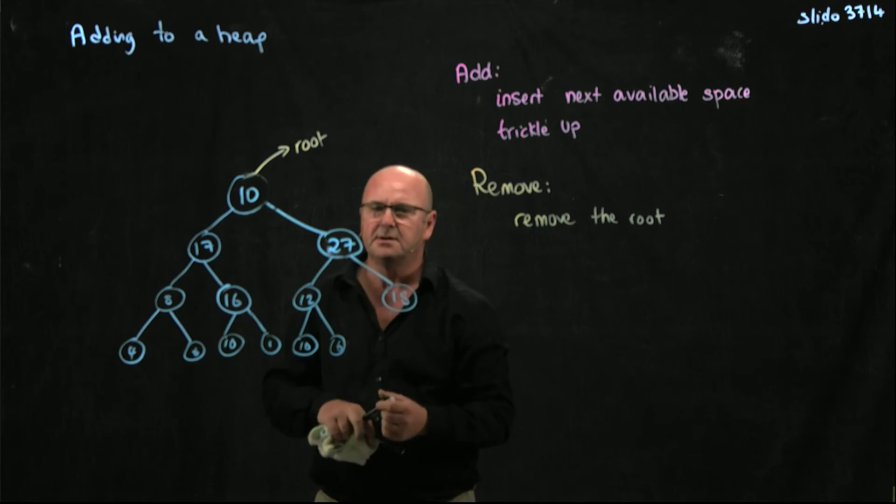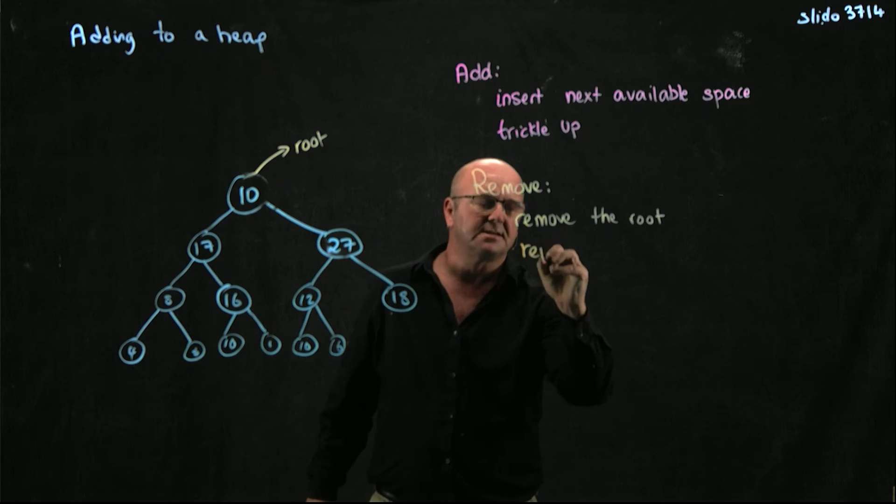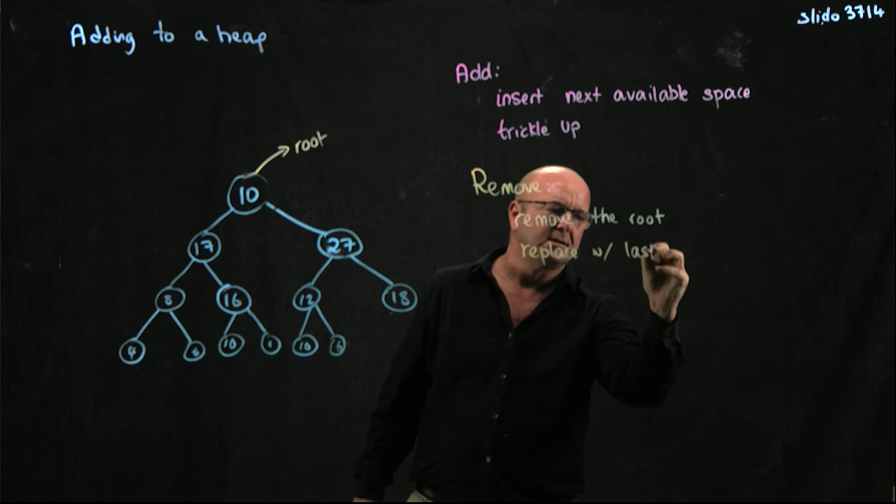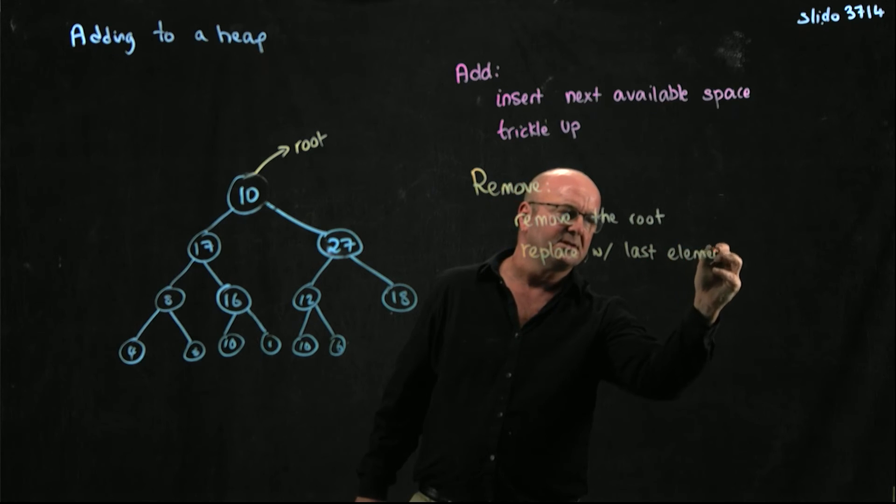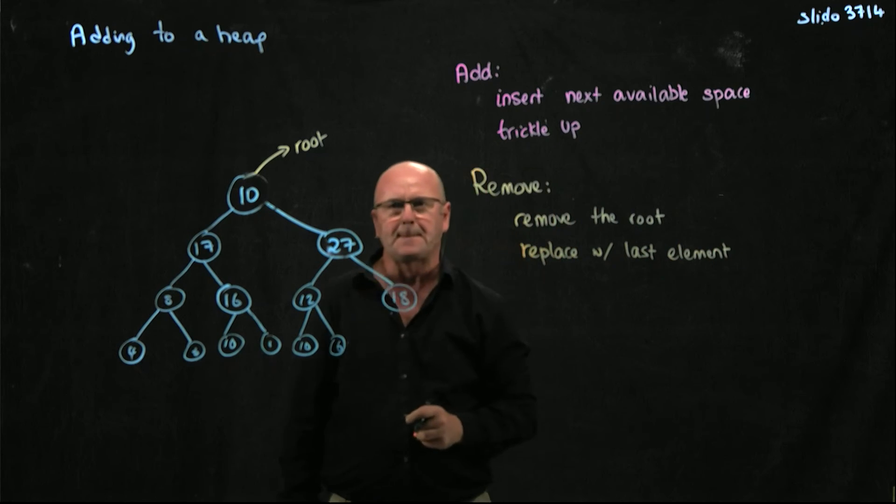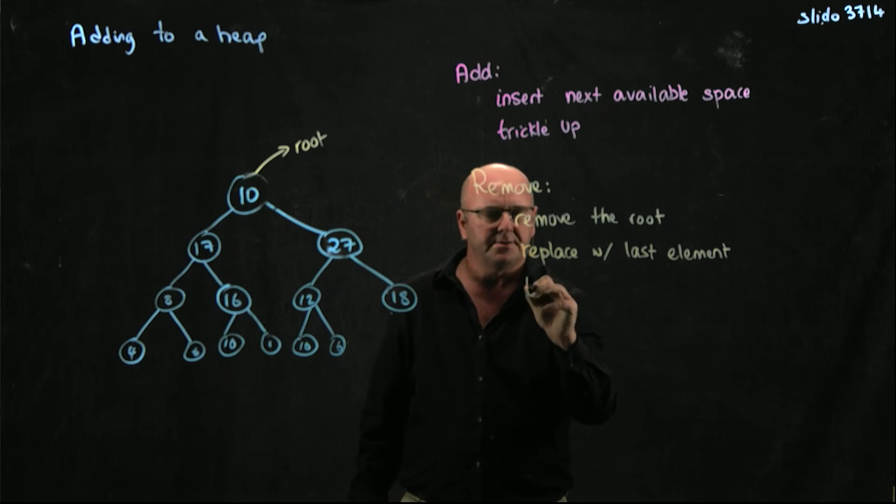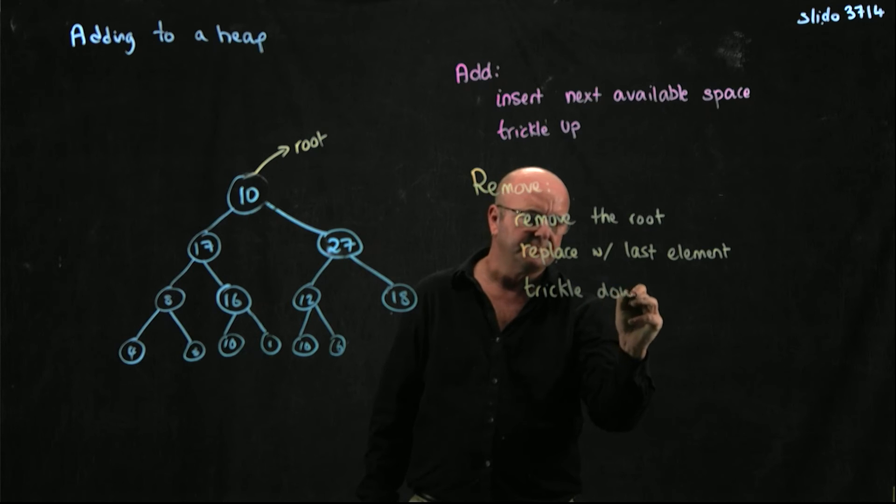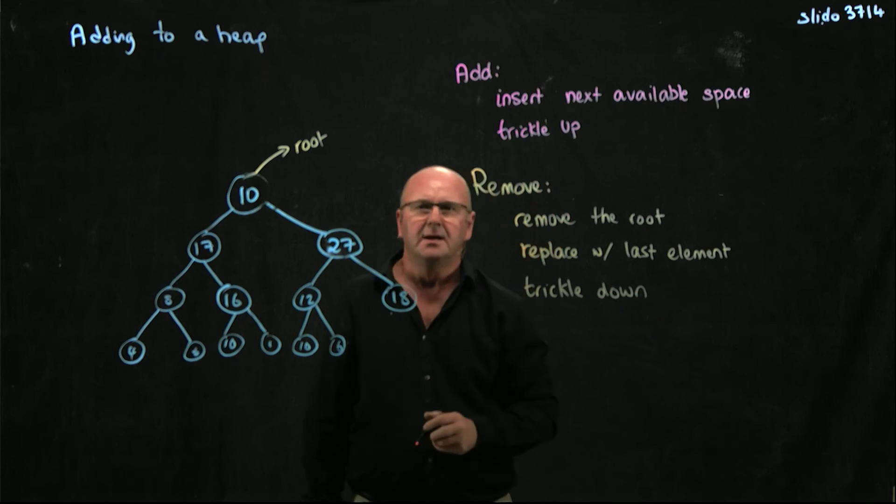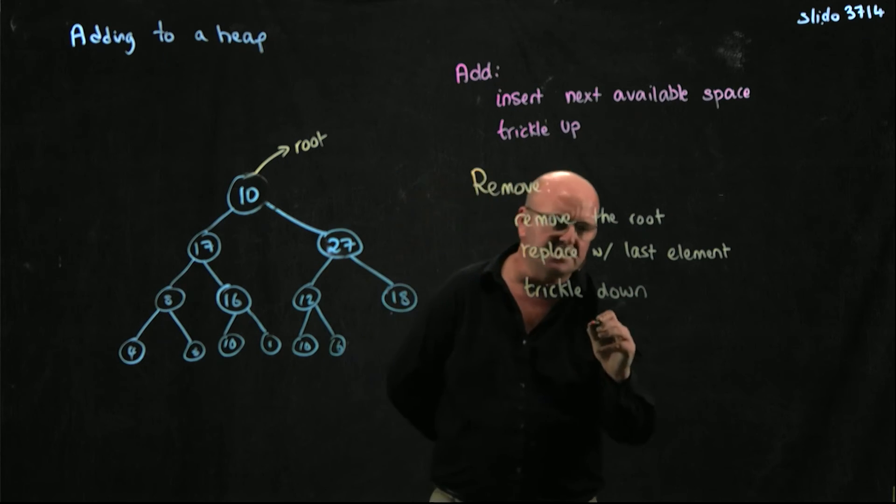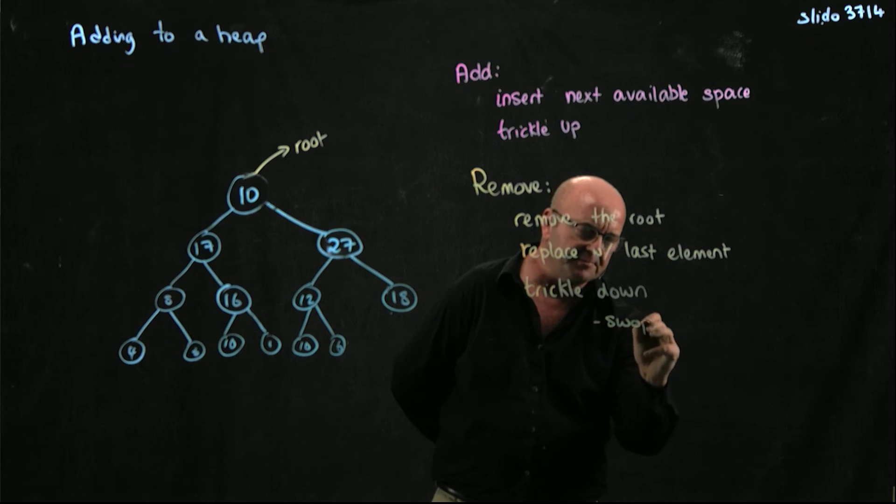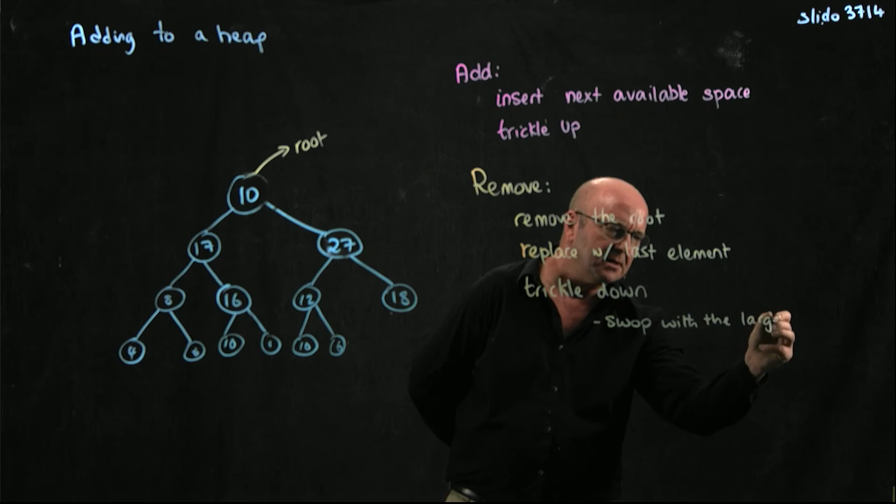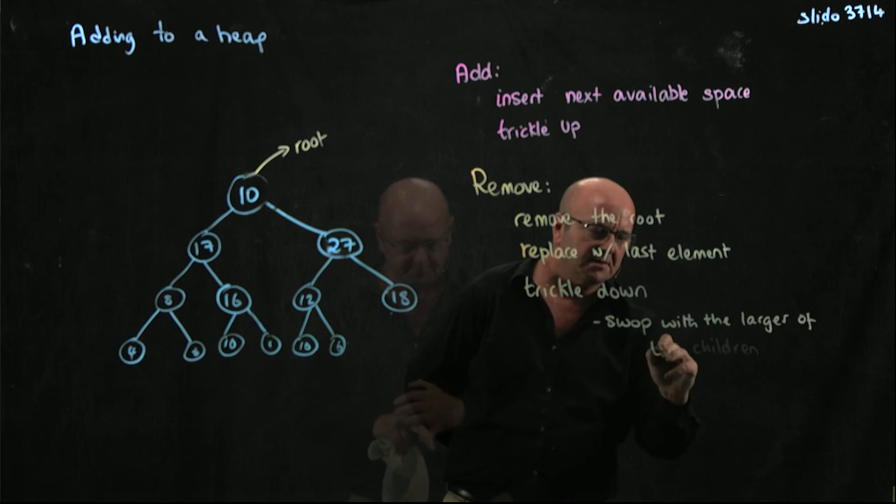So you remove the root node, you replace with the last element in the heap, and then you trickle down. And to trickle down, what you do is you swap with the larger of the children.